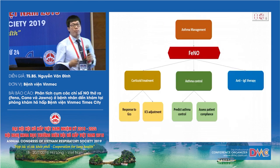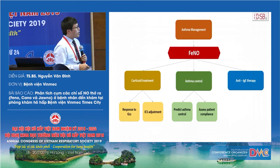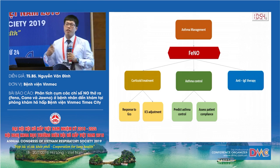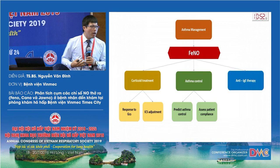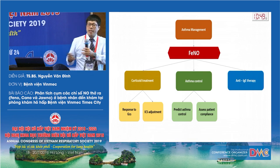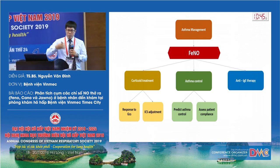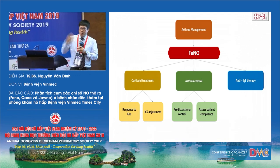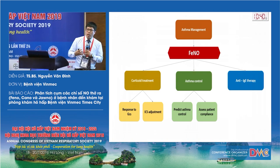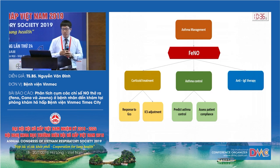For asthma management with FeNO, we can use FeNO to predict the response to corticosteroids for the patient with asthma. We can follow up the patient and assess the dose of inhaled corticosteroid, and we can predict the risk of asthma exacerbation for the patient based on the FeNO measurement. So FeNO is very useful in asthma.